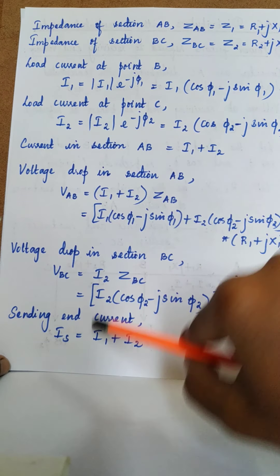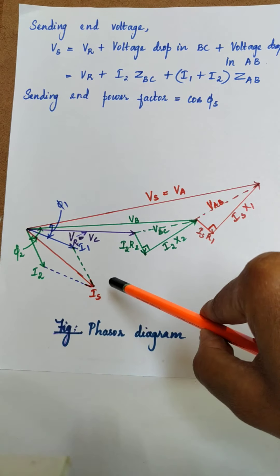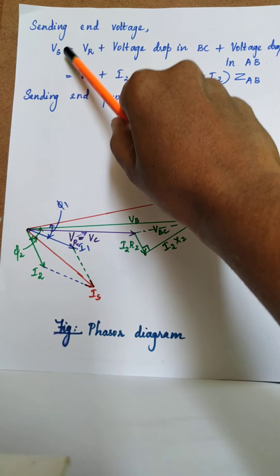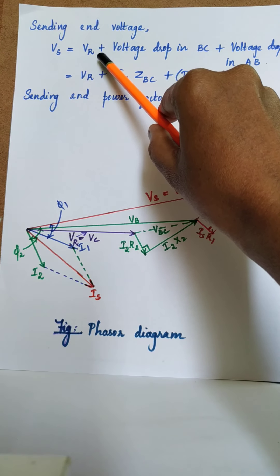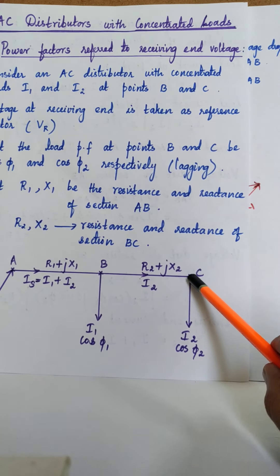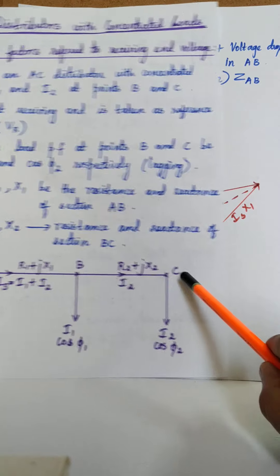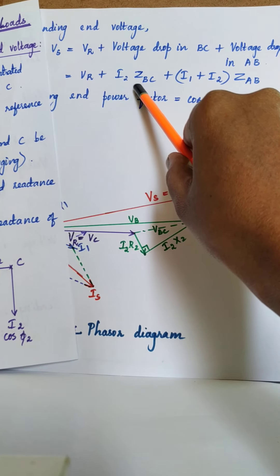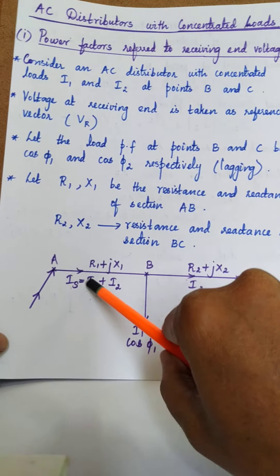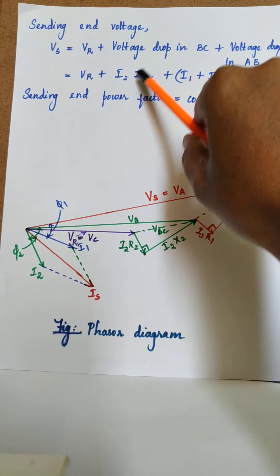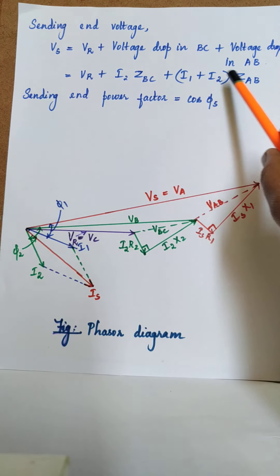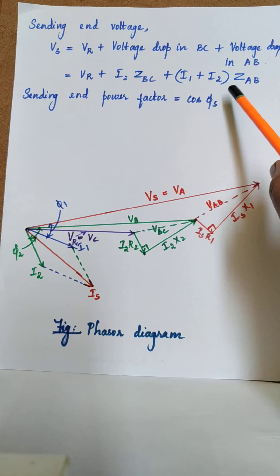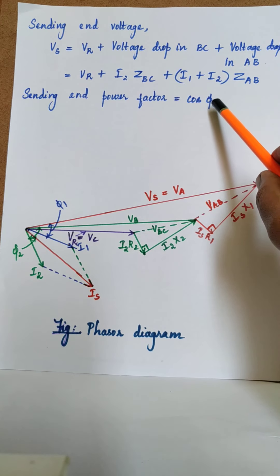I1 plus I2 is nothing but the sending end current. The sending end voltage VS is equal to VR — the voltage at the receiving point VC — plus drop in BC plus drop in AB. Drop in BC is I2 into ZBC, and drop in AB is I1 plus I2 into ZAB. The sending end power factor is taken as cos phi S.